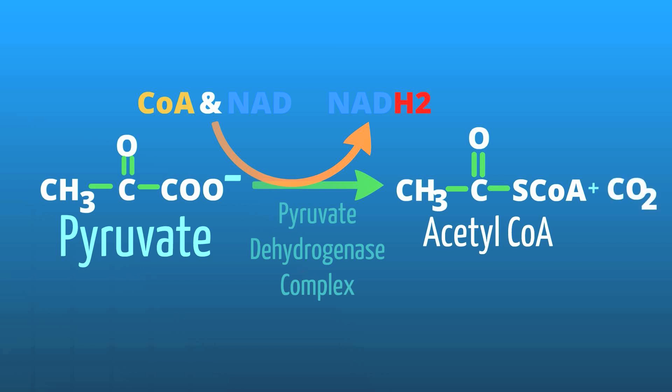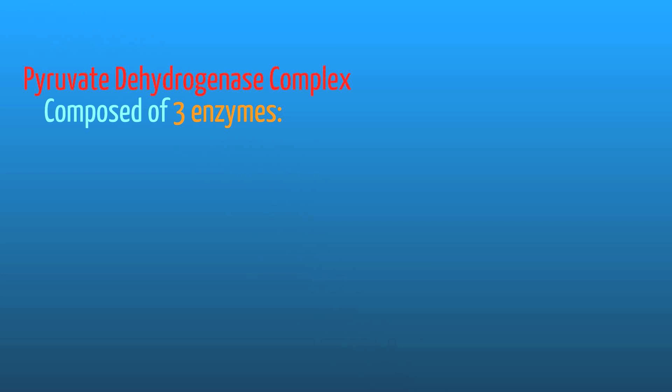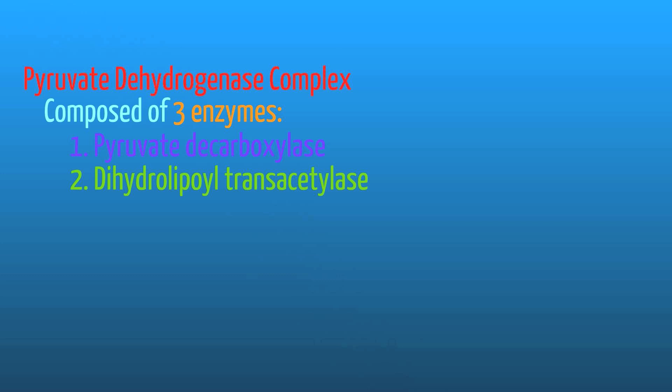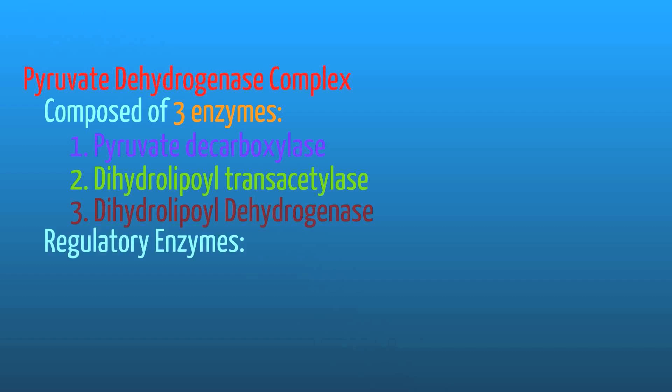The enzyme complex involved is the pyruvate dehydrogenase complex. It is composed of three main enzymes: pyruvate decarboxylase, dihydrolipoyl transacetylase, and dihydrolipoyl dehydrogenase. The enzyme complex also contains regulatory enzymes involved in activation and inactivation of the complex. These regulatory enzymes are protein kinase and phosphoprotein phosphatase.